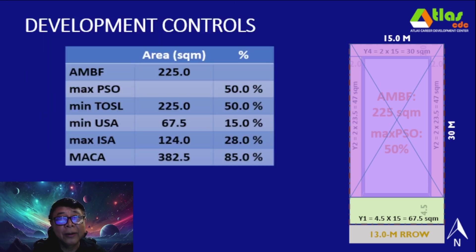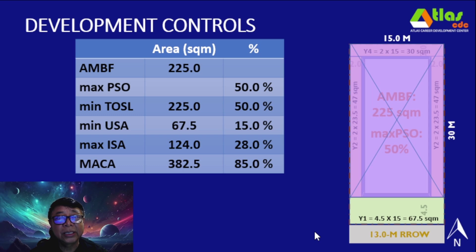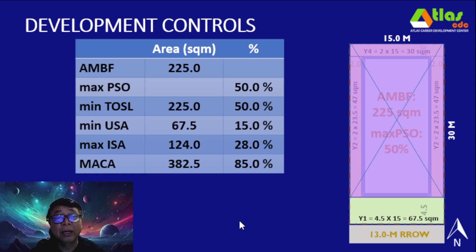Summarizing the development controls at grade level: AMBF is 225 square meters (50% maximum PSO), and the corresponding minimum TOSL is also 50%, or 225 square meters. Minimum USA is 15%, representing the front yard area of 67.5 square meters. Maximum ISA is 28%, or 124 square meters. MACA is 85%, or 382.5 square meters. Adding MACA and minimum USA: 382.5 plus 67.5 equals 450 square meters — the full TLA, confirming the totals check out.